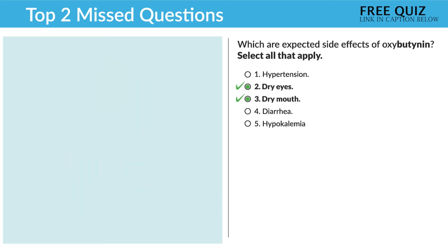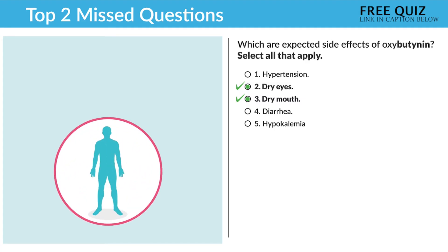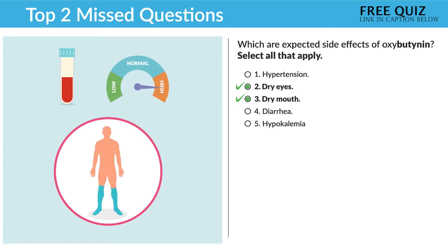Lastly, hypokalemia — this one was a little tricky, but it's incorrect. The medication dries the body, so we typically get labs that are high when the body is dry. We call them high-and-dry lab values, also known as hemoconcentration, which is an indication of dehydration.